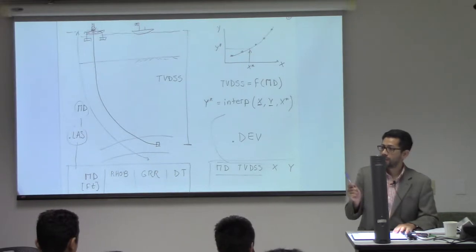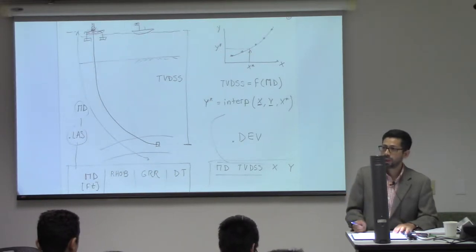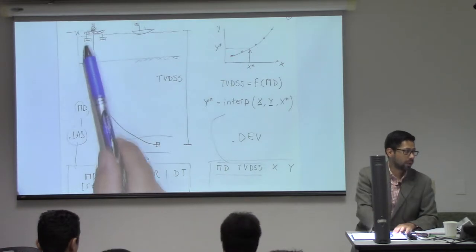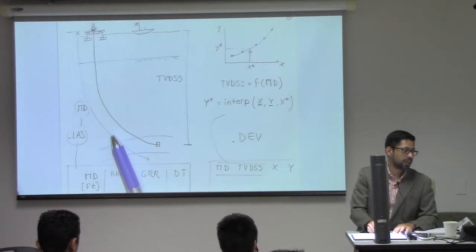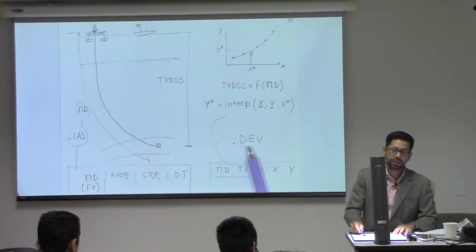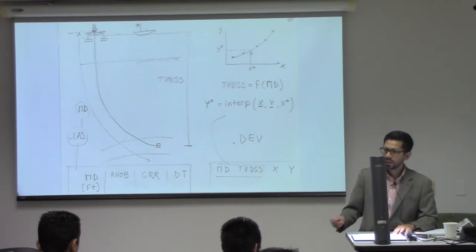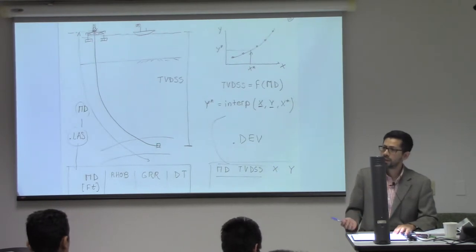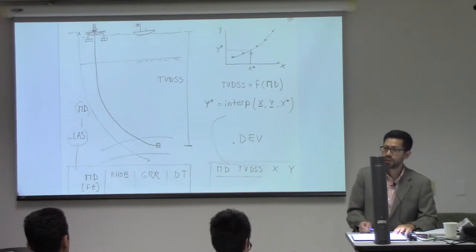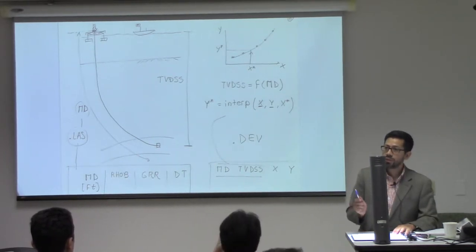But measured depth is not necessarily true depth. In order to calculate vertical stress, you need true vertical depth. You may have a wellbore that goes vertical and then goes into a lateral for a very long distance — you're not adding weight to that as long as it goes horizontal. So you need to do that conversion.